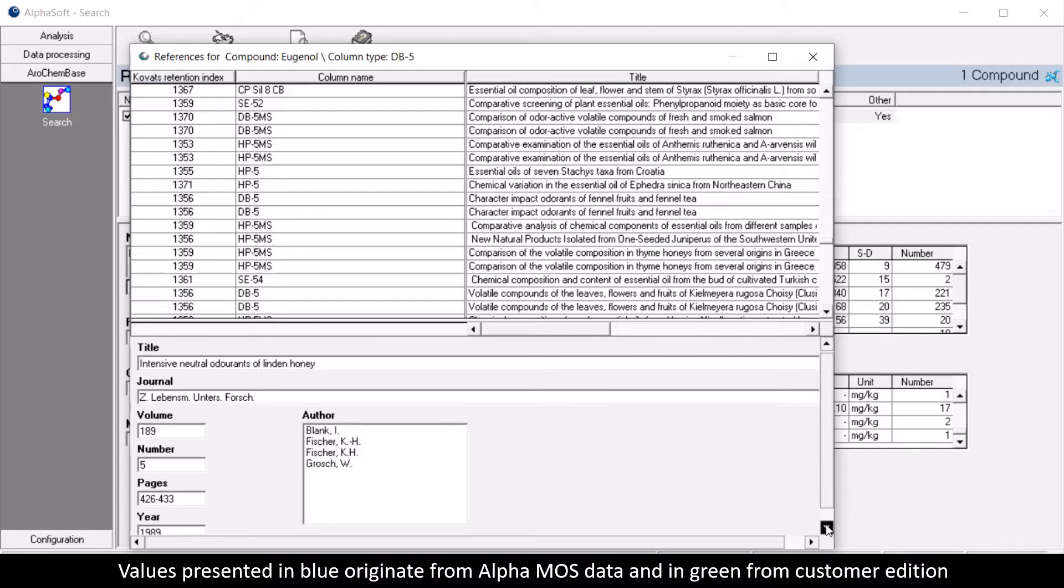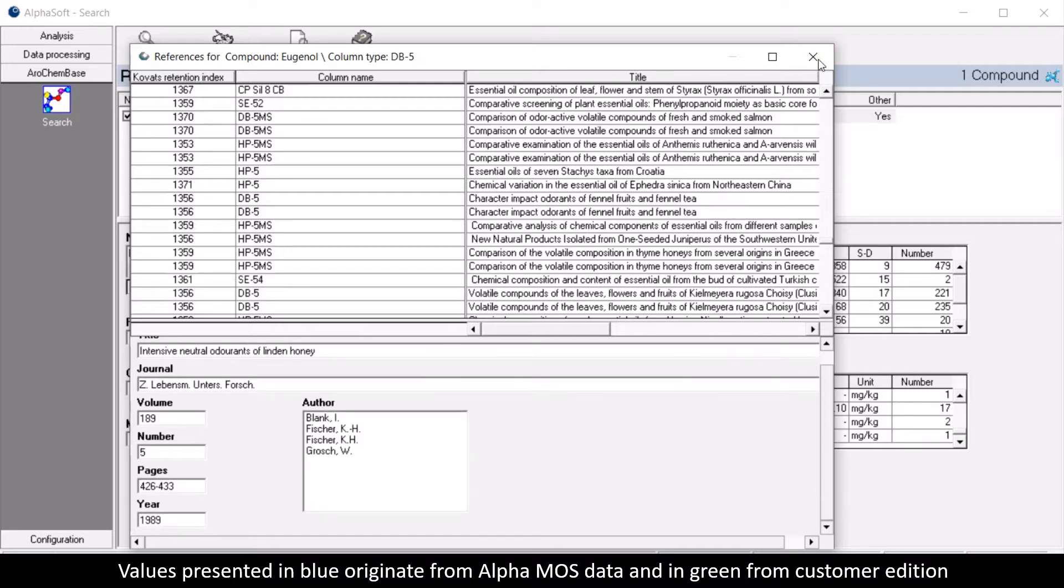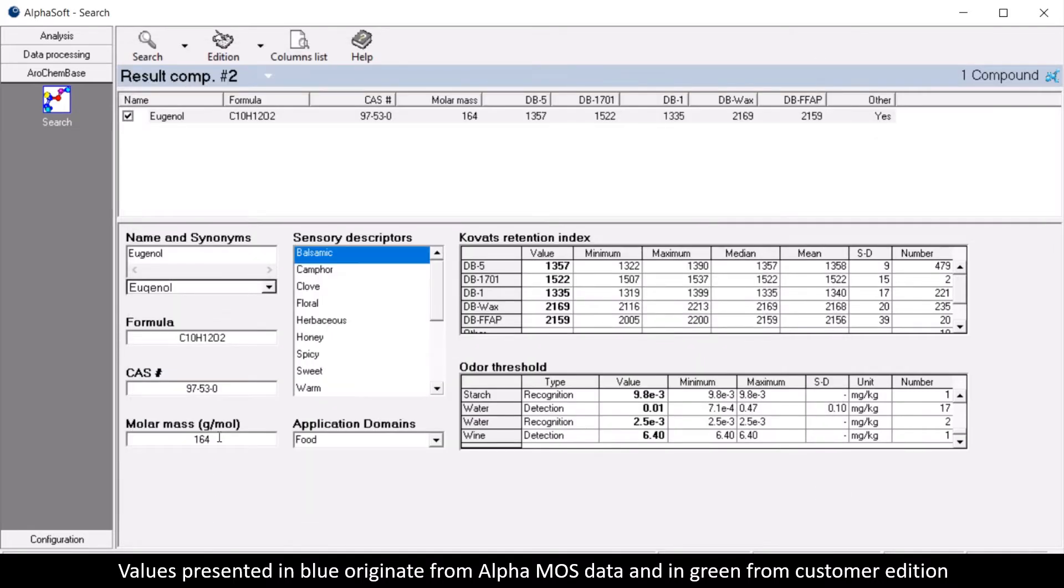Values presented in blue originate from Alpha MOS data and in green from customer edition. The individual values of Kovats can be visualized by double-clicking on the line.